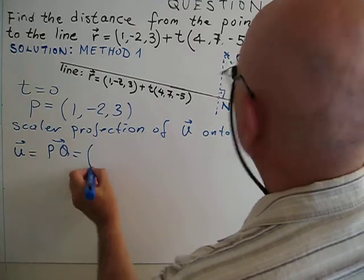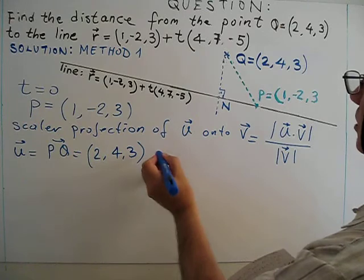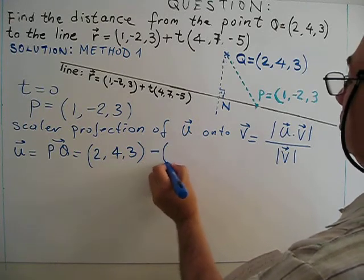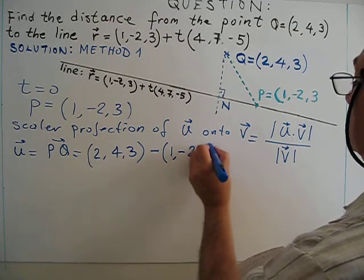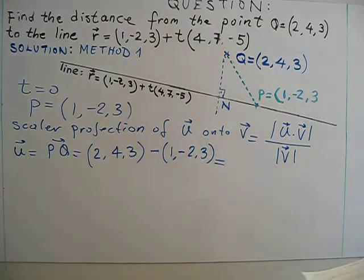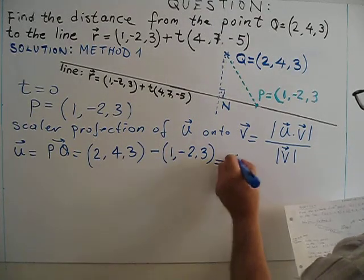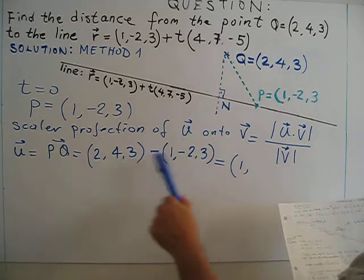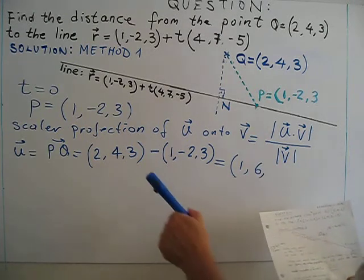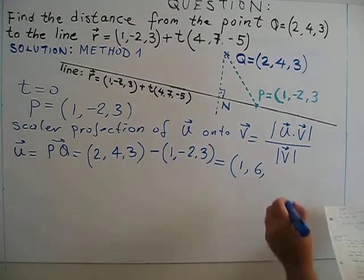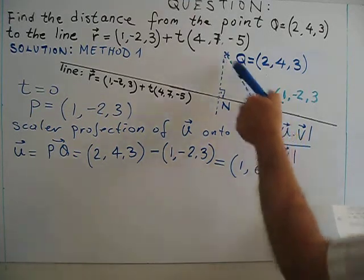So Q is (2, 4, 3), this is the coordinate of Q, minus coordinate of P (1, -2, 3), equals - so 2 minus 1 is 1, 4 minus negative 2 is 6, 3 minus 3 equals 0. So this is basically PQ or u.